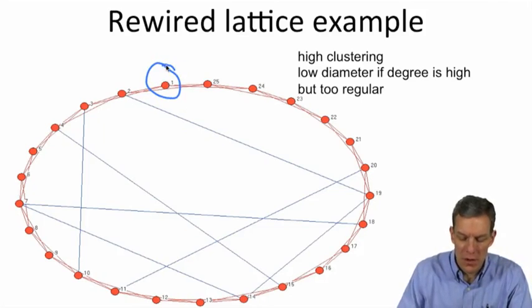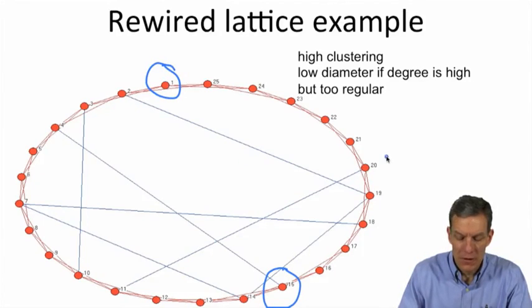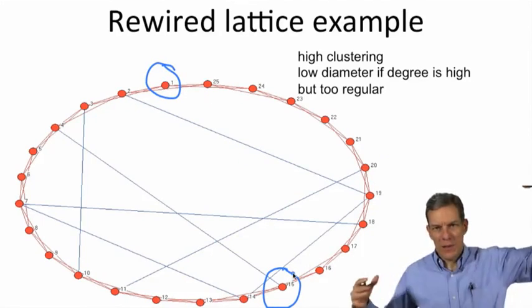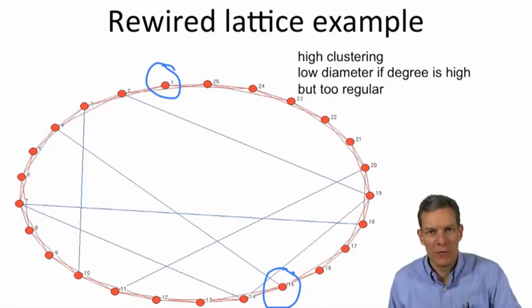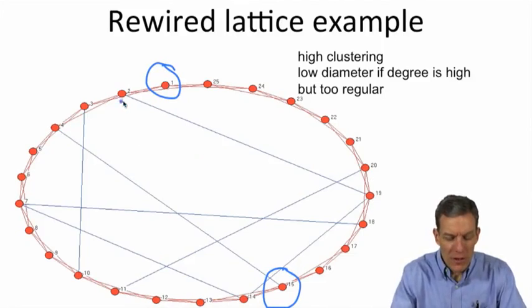You'd have to go marching around the circle. Your path length, especially if you expanded this thing to be a much larger graph, your path length would be quite far.